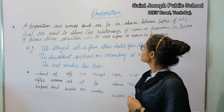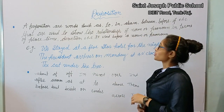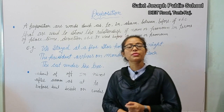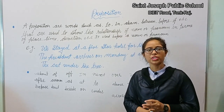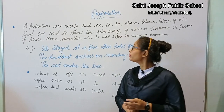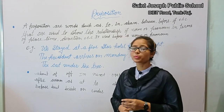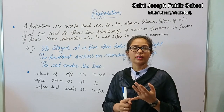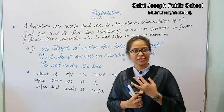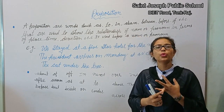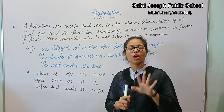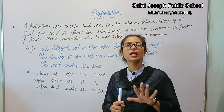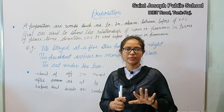Now our topic is preposition. Last class we discussed parts of speech. We covered four parts: noun, pronoun, adjective, verb, and adverb — five parts in total, and those five parts are done.